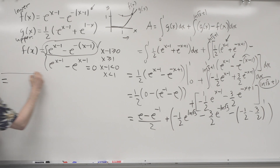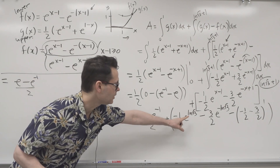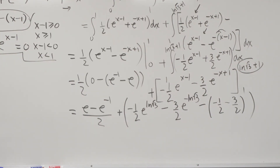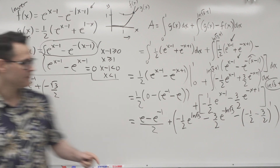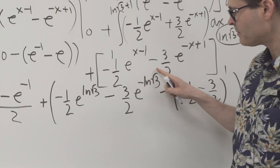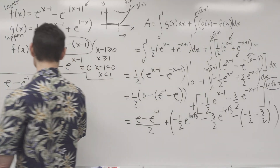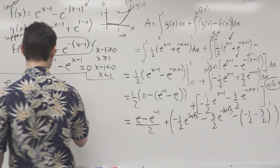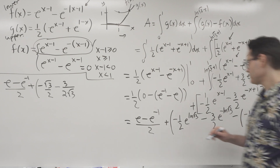So that equals (e − e^(−1))/2. And e^(ln√3) is just √3, so that's −√3/2. Then e^(−ln√3) can be written as 1/√3, giving −(3/2)(1/√3) = −(3/(2√3)) = −√3/2. And −(1/2) minus (3/2) is −4/2 = −2, and a negative times negative gives positive 2.